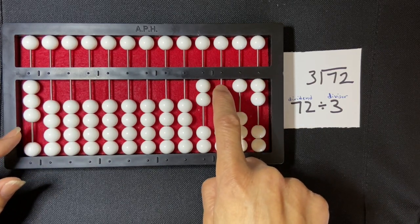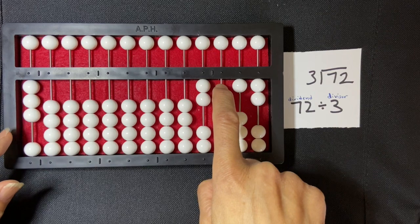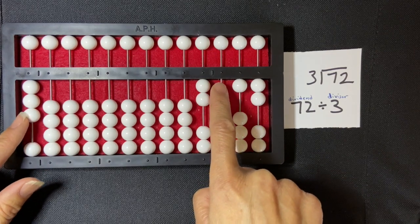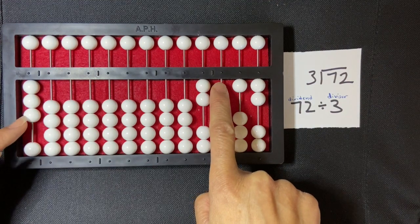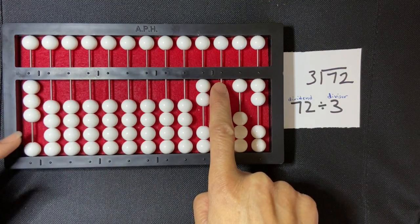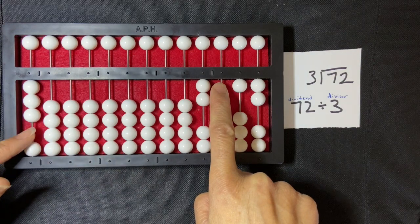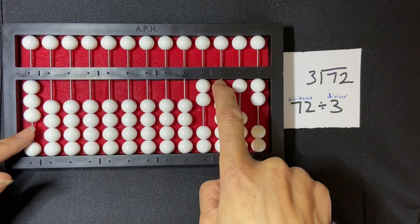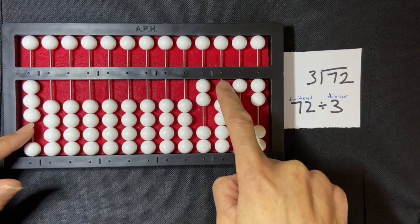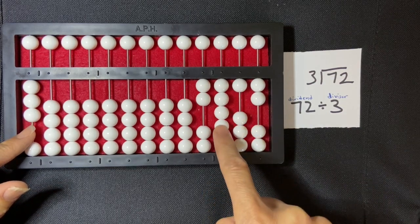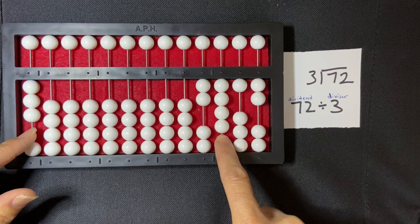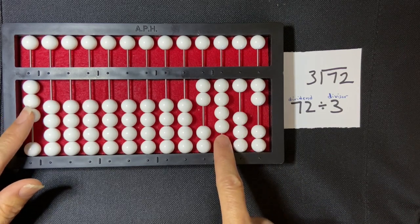So I'm not going to skip a rod. I'm going to go directly to the left of that first number in my dividend, and then I'm going to compare three going into 12. How many times can three go into 12, or how many groups of three go into 12? And I know that three times four is 12, so I'm going to set four on this third rod. One, two, three, four. Now I have to do my subtraction because four times three is 12.